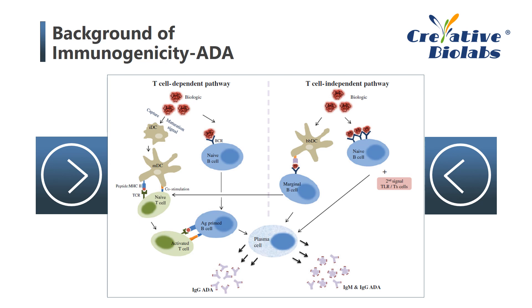Cross-talk between these pathways contributes significantly towards the immunogenic response. Abbreviations: ADA — anti-drug antibodies; Ag — antigen; BBDC — blood-borne peripheral dendritic cells; MDC — mature dendritic cell; TCR — T-cell receptor; TH cell — T-helper cell; TLR — toll-like receptor.